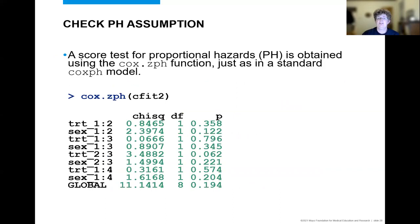Because this was using Cox pH, most of the extra functions can also be used, such as Cox dot CPH, which tests the proportional hazards assumption. And in this particular example, the proportional hazards assumption does not appear to be violated. There's no evidence to reject that.